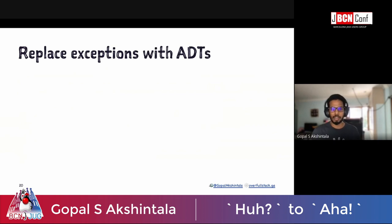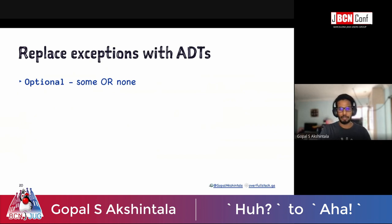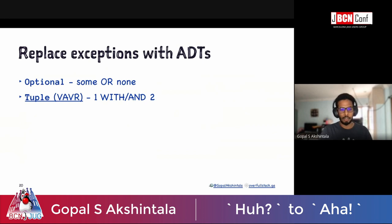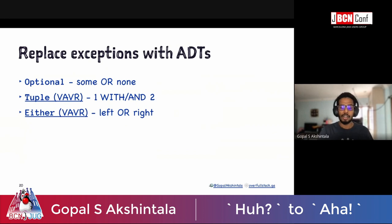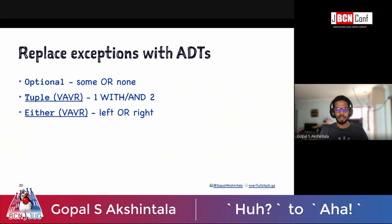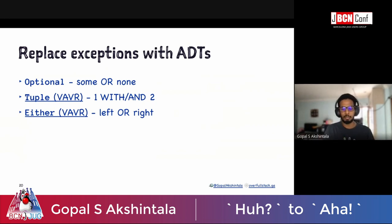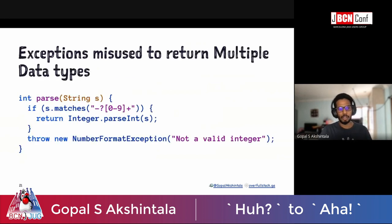You can replace all your exceptions with ADTs — algebraic data types. They're not as scary as they sound. As simple as Optional, which represents some or none. There's also Tuple from the Vavr library — like a pair, one with another. And Either, which is like an enum that can be left or right — two containers storing values. My convention: when something is wrong, I put it on the left; if everything is right, the value goes on the right.